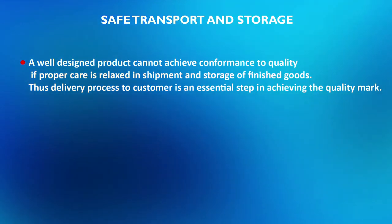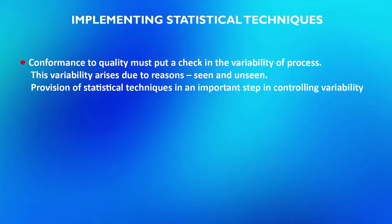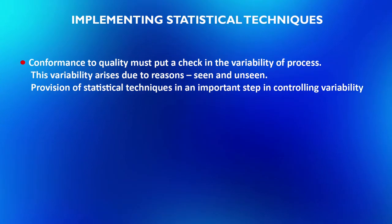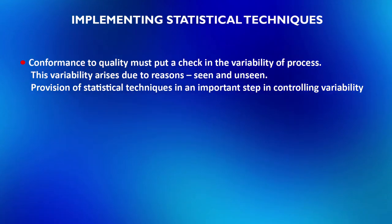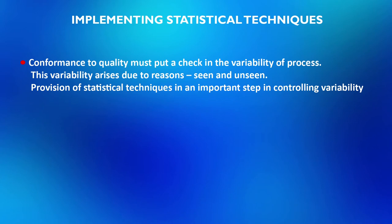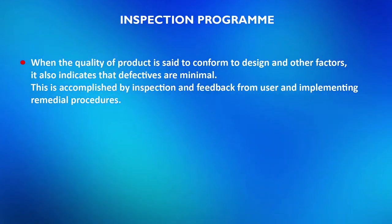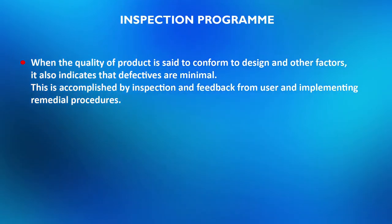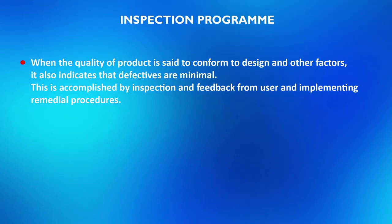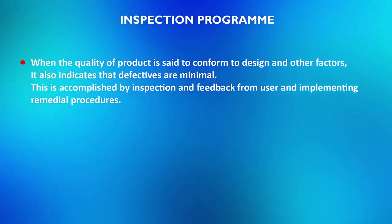Implementing statistical techniques is an essential step in achieving quality. Conformance to quality must put a check on the variability of process. This variability arises due to reasons seen and unseen. The provision of statistical techniques is an important step in controlling variability. When the quality of a product is said to conform to design and other factors, it also indicates that defectives are minimal. This is accomplished by inspection and feedback from users and implementing remedial procedures.